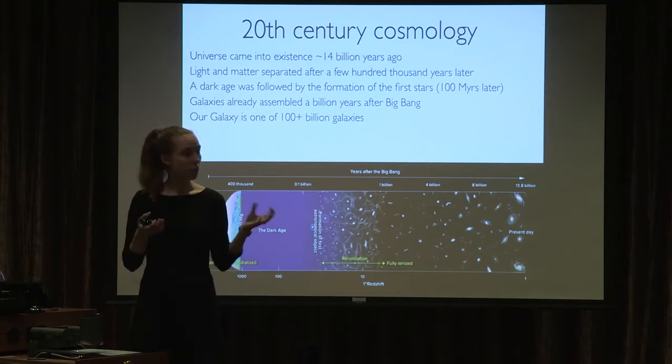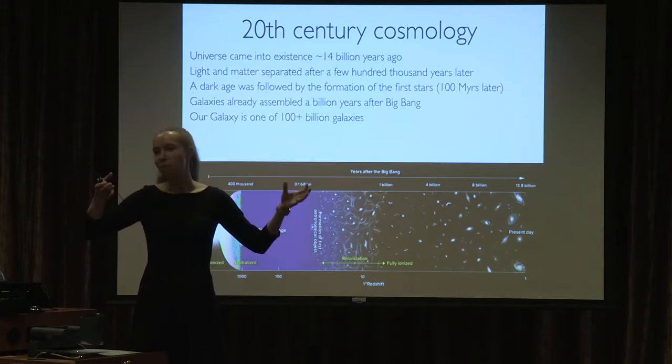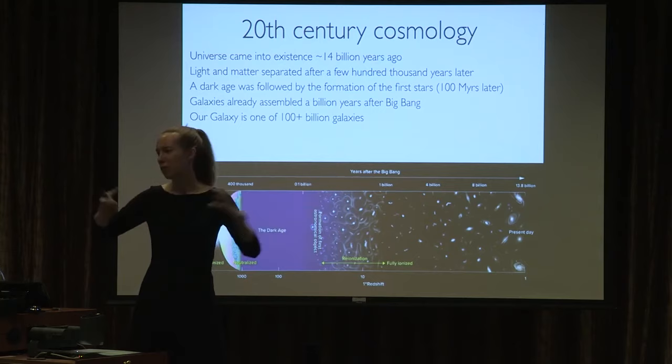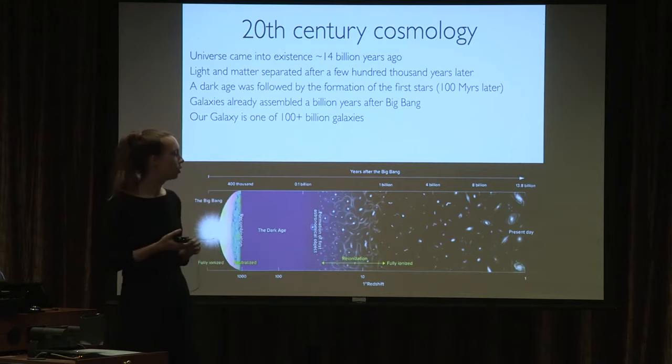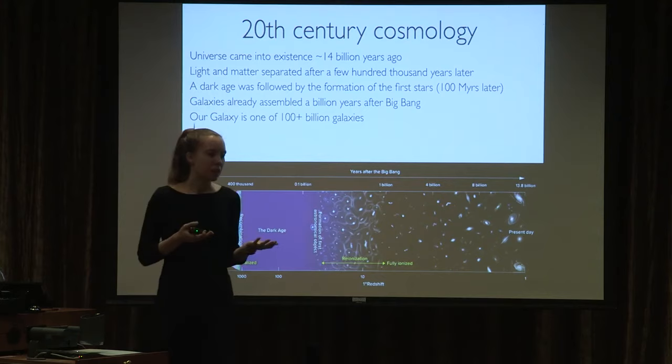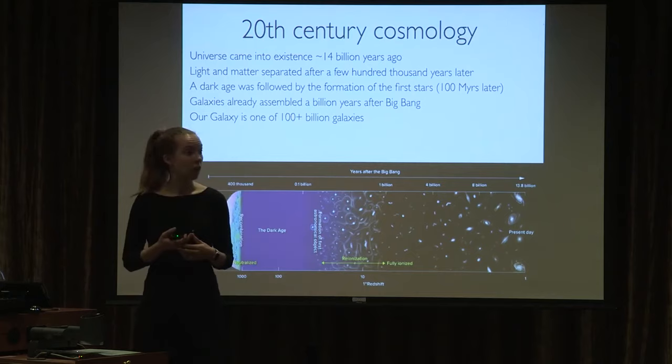Stars form basically from atoms collapsing—atoms that are more diffusely distributed start to collapse in on themselves until it gets hotter and hotter and you form a star. That took some time before that could happen, but within a billion years or so of the Big Bang you do have something starting to resemble the universe we have today—you have galaxies, you have stars, might even have planets.